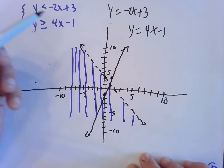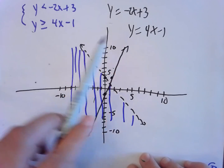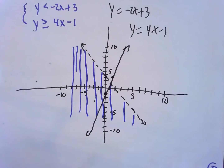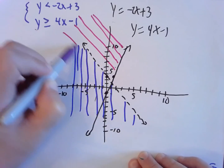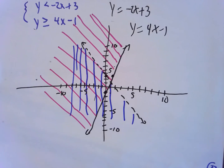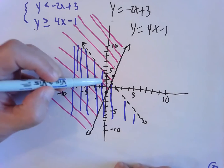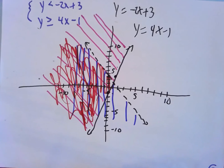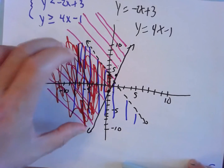Using the shortcut again — I see greater than or equal to, so I shade above the second line. The region shaded twice is the solution — that corner between the two lines where both shadings overlap. The rest is just intermediate work. The solution is that corner region.